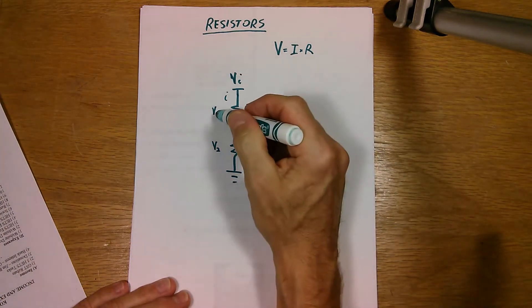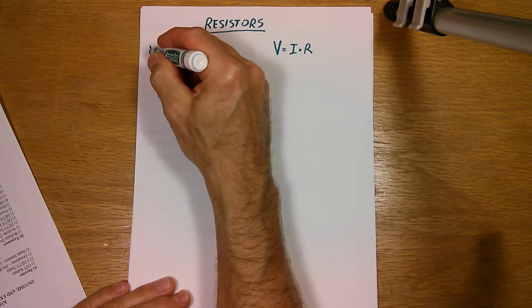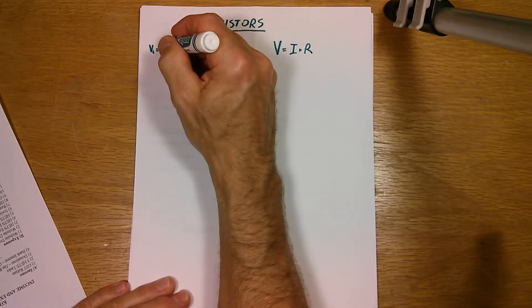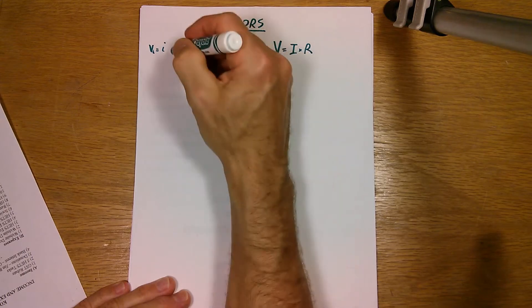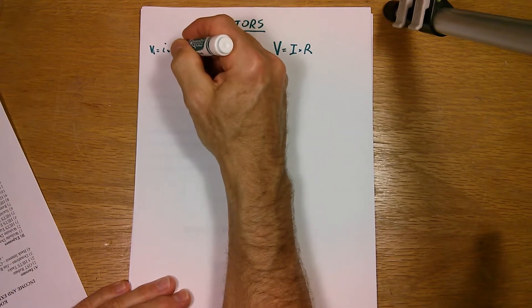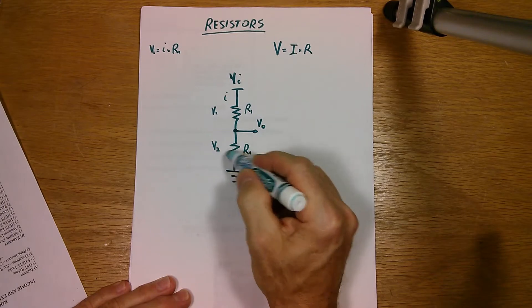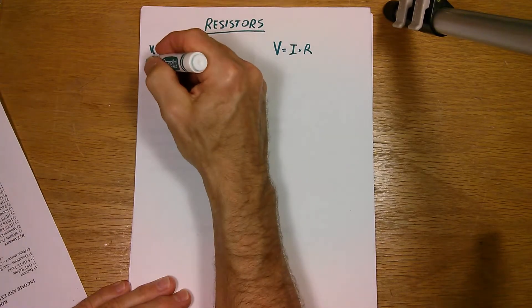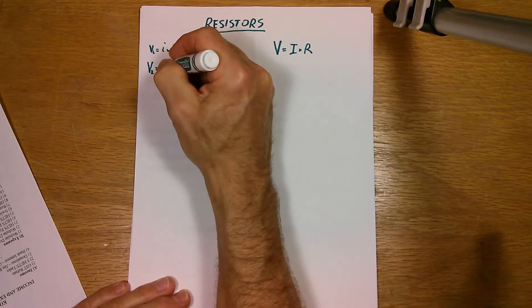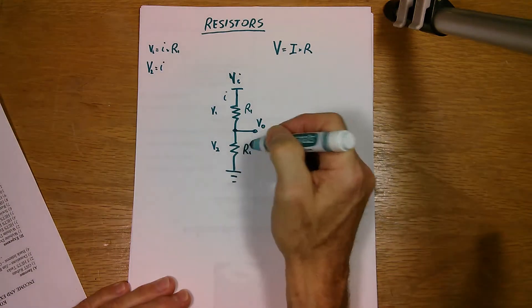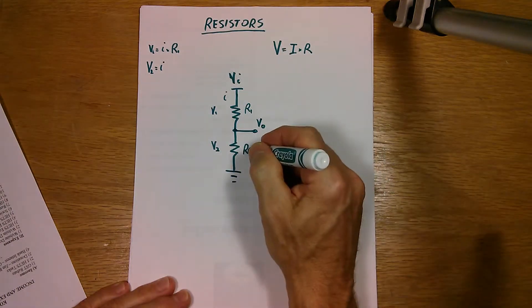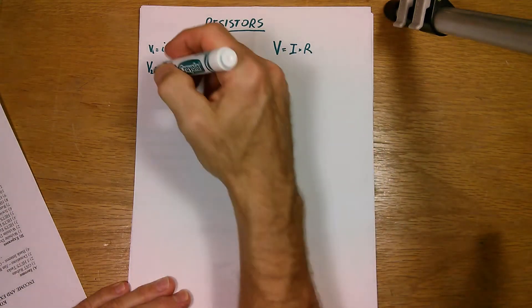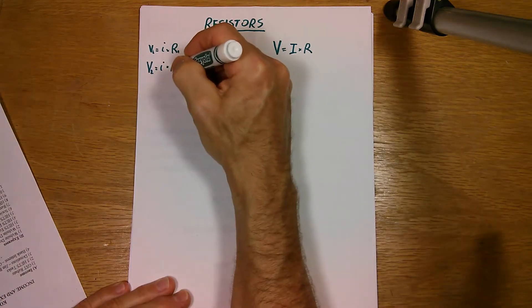Now the voltage here, V1, is equal to the current, I, that flows through the resistor, times the value of the resistor, R1. V2 here is the same thing. V2 equals I, the same current flowing through it, times R2.